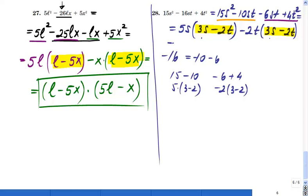So your trinomial will be now factored as 3s minus 2t times 5s minus 2t. And you have it. This is the factorization by grouping. That's it, thank you.